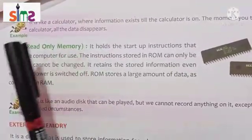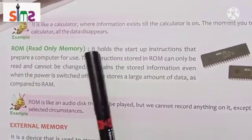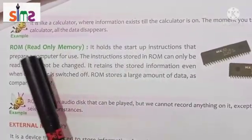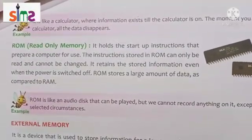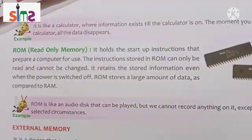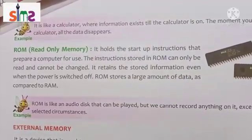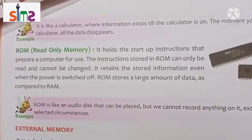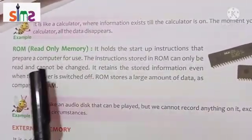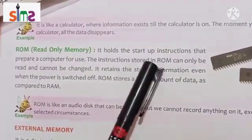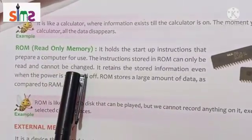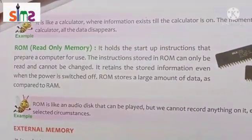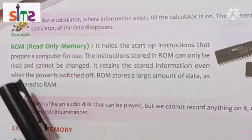Next is ROM — Read Only Memory. It holds the startup instructions that prepare a computer for use. When we turn on the computer, those startup instructions are called ROM. The instructions stored in ROM can only be read and cannot be changed. It retains the stored information even when the power is switched off.